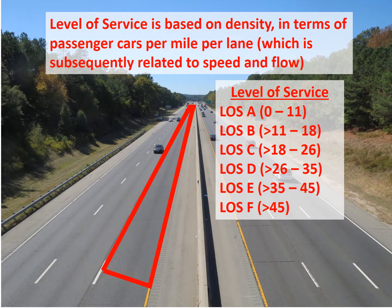Level of service E is greater than 35 passenger cars per mile per lane and up to 45. Level of service F is forced flow — typically denoted by stop-and-go movement — and occurs when there are greater than 45 passenger cars per mile per lane.